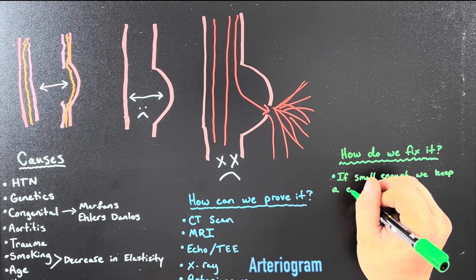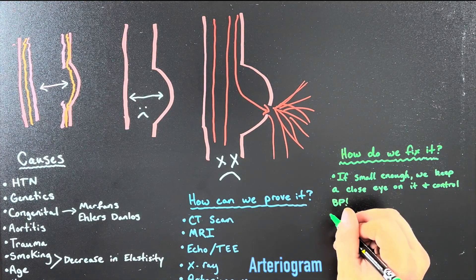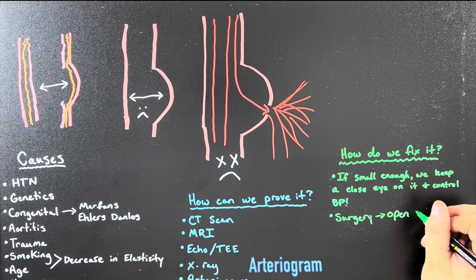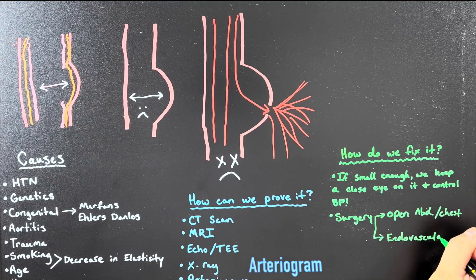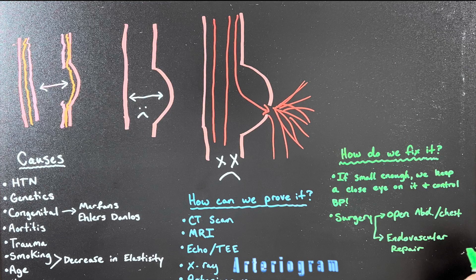What do we do to fix it? If they're small enough, you keep a close eye on it, stay in touch with your vascular team, do regular monitoring checkups, and control the things that make them worse — such as blood pressure. After that, if you need it repaired, surgery. There's open abdominal or chest surgery, and then there's endovascular repair, which is a much simpler and more straightforward procedure where they go in through your groins and place a graft — much shorter repair and recovery time.